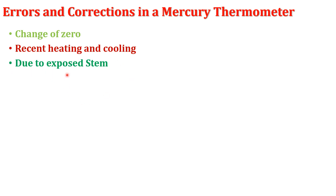The next error is due to the exposed stem. While calibrating, the thermometer as a whole is kept in the steam chamber. But while actually measuring the temperature of a hot system, only the bulb is immersed in the bath, so the observed reading will be lower than the correct reading. To correct this, the maximum possible length of the stem should be immersed in the bath.